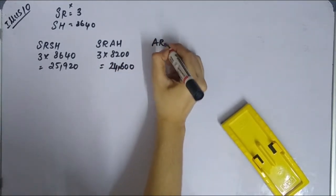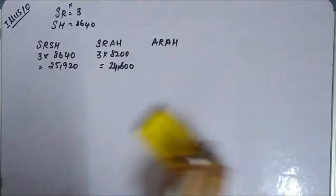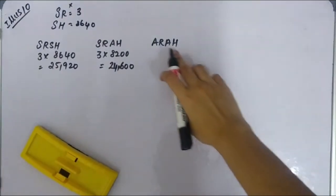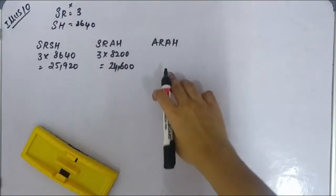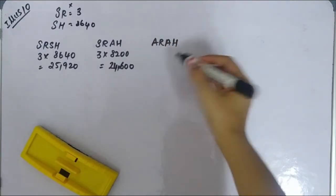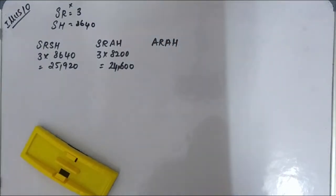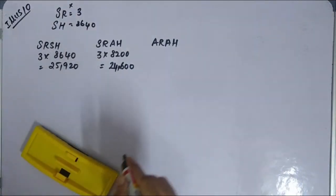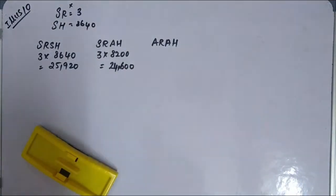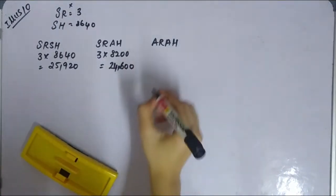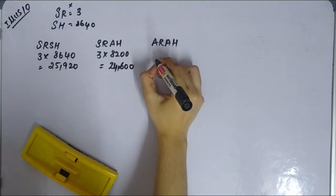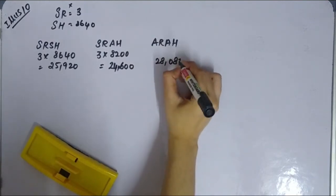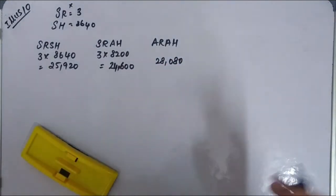For ARAH, we use the actual rate multiplied by actual hours. Since the actual rate is not directly given, we use the gross wages direct, which is 28,080 rupees. So ARAH = 28,080.